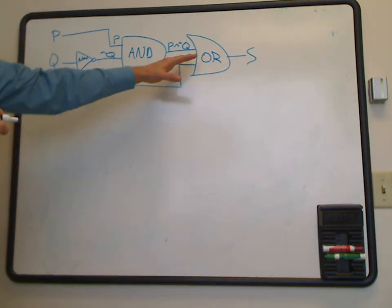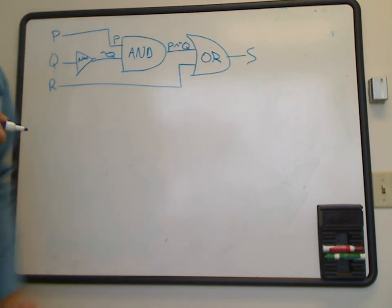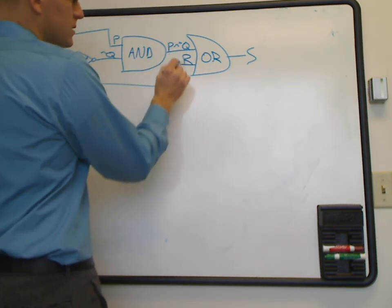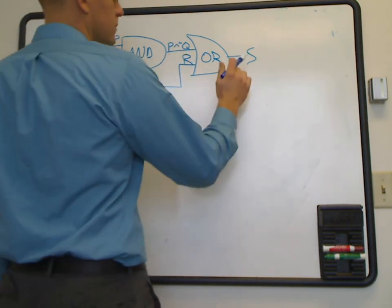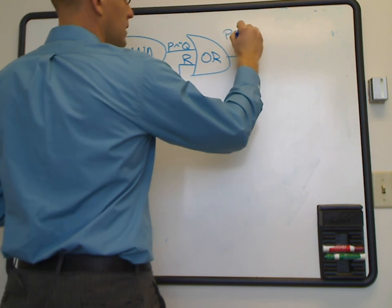Now, we want to figure out what the output of our OR is because that's our ultimate output of this circuit. So we need to OR these two components together. So that becomes P AND NOT Q.